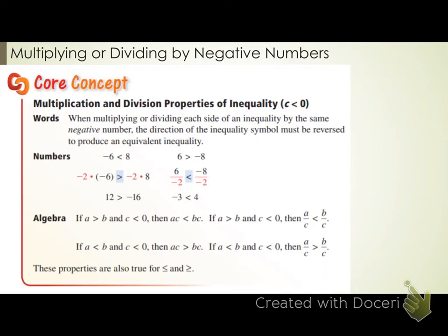This is about the multiplication and division properties of inequality when my C value is less than zero. All this is saying is: if you multiply or divide both sides of an inequality by a negative, your inequality symbol must flip.